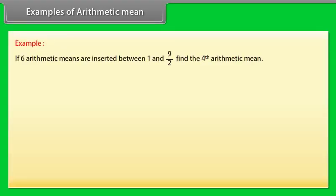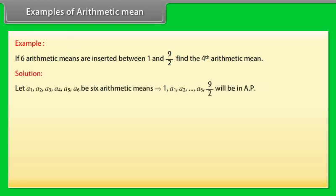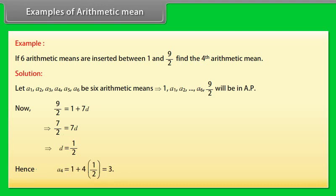Example of Arithmetic Mean: If six arithmetic means are inserted between 1 and 9/2, find the fourth arithmetic mean. Solution: Let A1, A2, A3, A4, A5, A6 be six arithmetic means. Then 1, A1, A2, ..., A6, 9/2 will be in AP. Now 9/2 = 1 + 7D, which implies 7/2 = 7D, so D = 1/2. Hence A4 = 1 + 4×(1/2) = 3.